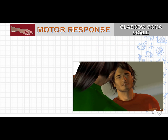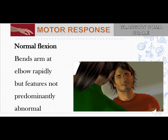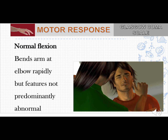Next in motor response is normal flexion. If the person flexes the arm to withdraw from pain at pressure areas such as the sternal notch or fingertips, or nods the head to relieve pain from the supraorbital notch, then you give a score of 4.